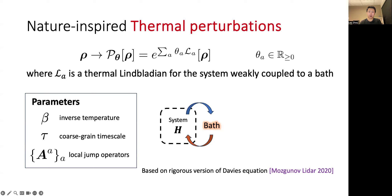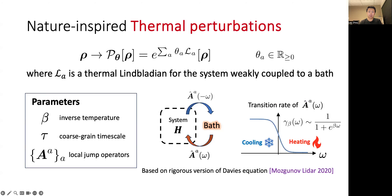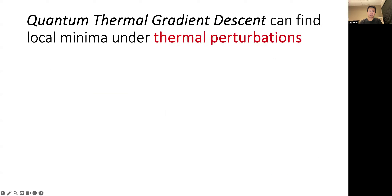Generally, if you look at a jump operator in the energy eigenbasis, you can either increase or decrease the energy of the system. In these thermo-Lindbladians, the temperature of the bath sets a transition rate which favors cooling over heating operations. We now give a new quantum optimization algorithm, which we call quantum thermal gradient descent, that can efficiently find local minima of quantum systems under thermal perturbations.